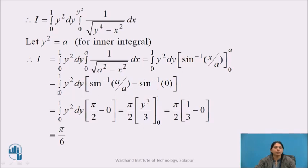Substituting the limits, the integral becomes integration from 0 to 1, y² dy, times [sine inverse of (A/A) minus sine inverse of 0]. Since A/A equals 1 and sine inverse of 1 is π/2, and sine inverse of 0 is 0, we get integration from 0 to 1, y² dy, times π/2. Taking π/2 outside as a constant and integrating y² to give y³/3, we get π/2 times [y³/3] from 0 to 1, which gives π/2 times 1/3, giving us the value of the integral as π/6.